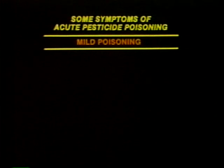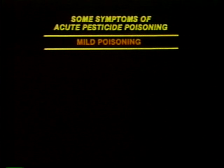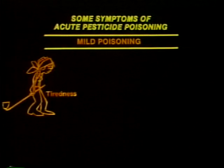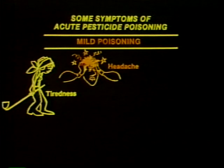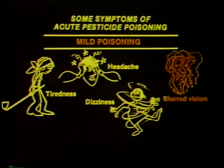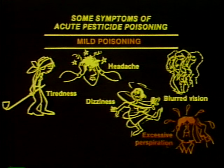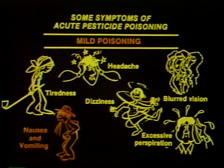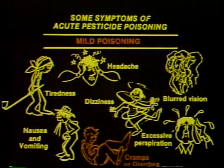What are the symptoms of pesticide poisoning? The following slides list symptoms for mild, moderate, and severe poisonings with some of the most commonly used insecticides. Mild poisoning symptoms include tiredness, headache, dizziness, blurred vision, excessive perspiration, nausea and vomiting, and cramps or diarrhea.